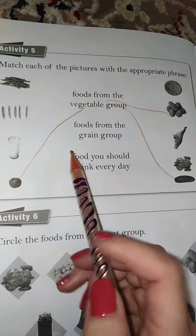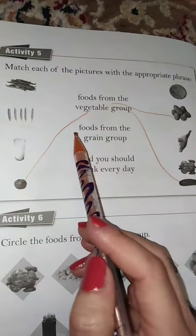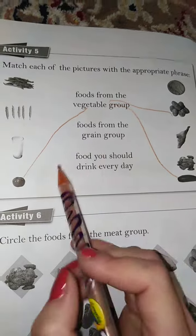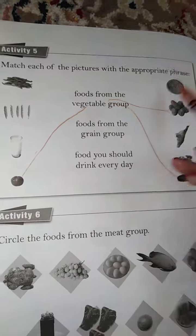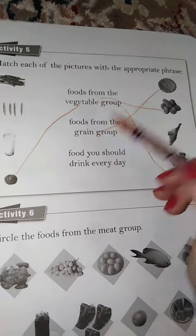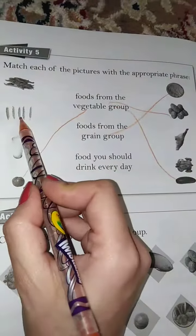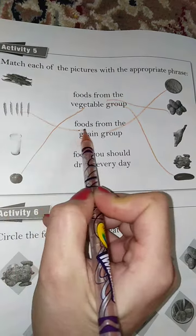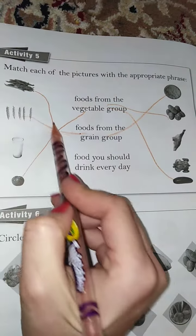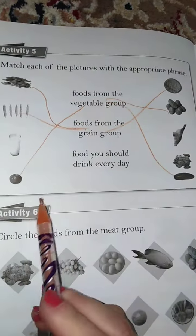Food from the grain group. Grain group — like rice, wheat, and beans.